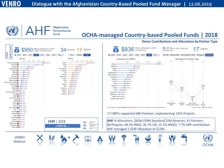Germany is an increasing donor to country-based pool funds. Traditionally the UK gives slightly more, though that may change over time. Other significant donors include Sweden, Netherlands, and Belgium. In 2018 we had 17 CBPFs; in 2019 we have 18, having started one in Ukraine.